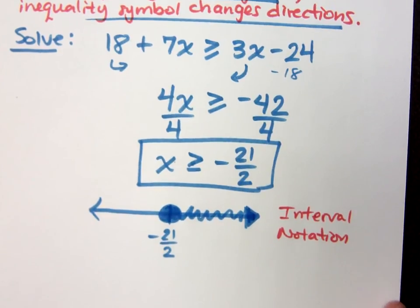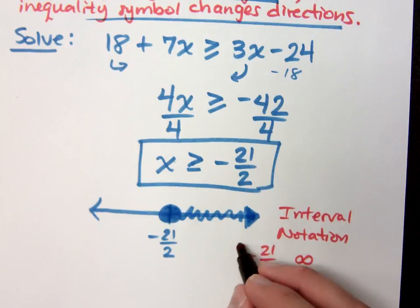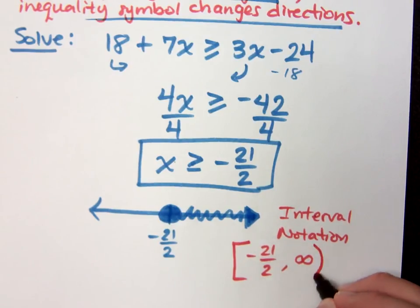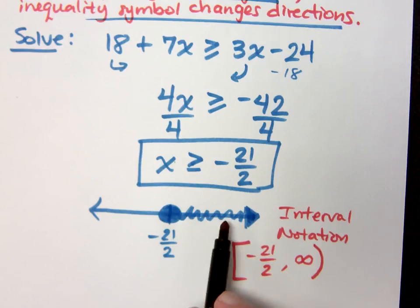I'm starting from negative 21 over 2. I'm going out towards positive infinity. We always use parentheses everywhere unless we have a closed circle. And with a closed circle, we'd use a bracket on that end. Everywhere else would have parentheses. So this is how I would represent this number line and this set of numbers using interval notation.